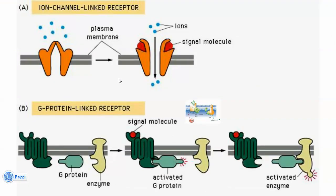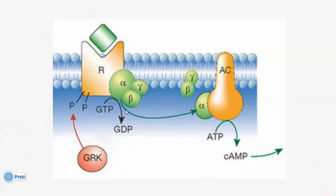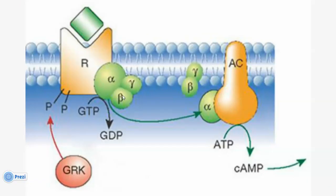The cell surface receptors are proteins, and we have three types. First: ion channel-linked receptors — they are activated when the signal molecule attaches to the receptor, allowing ions to enter the cell. Second: G-protein-linked receptors, which we will cover in detail in physiology. For now, know that the G protein consists of three subunits: alpha, beta, and gamma. The alpha subunit has two states — an active state and an inactive state. It is activated when it binds to GTP and inactivated when it binds to GDP.